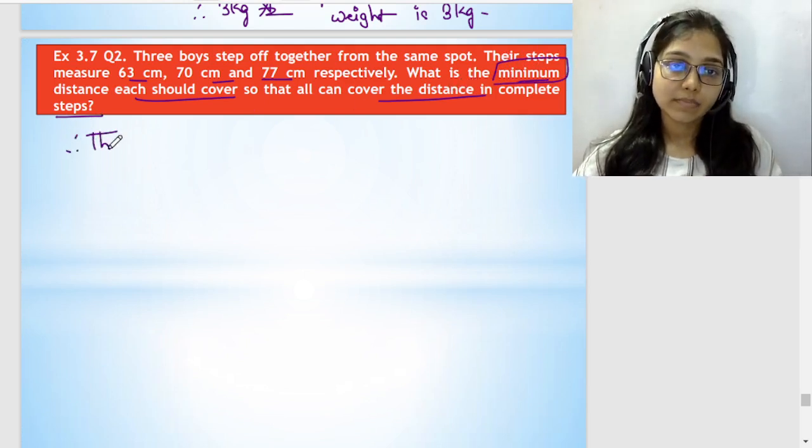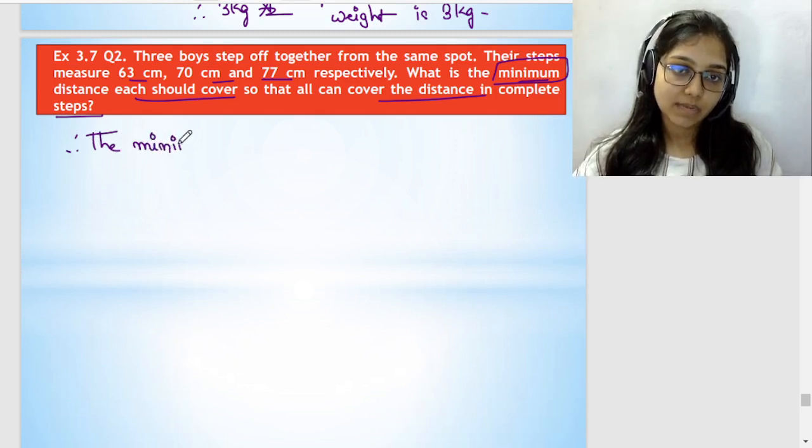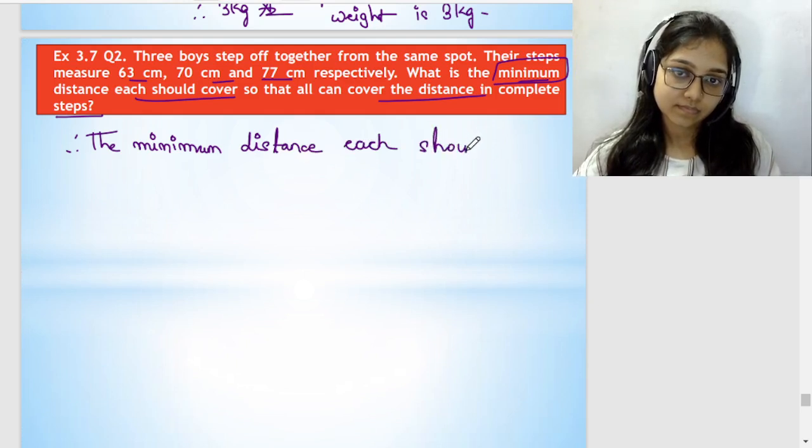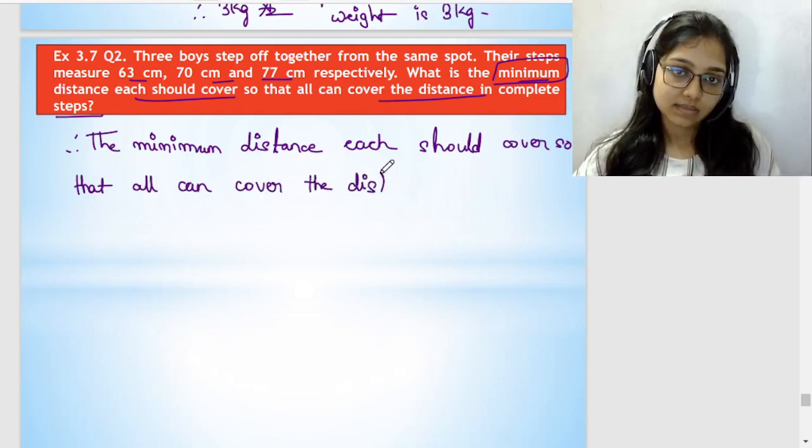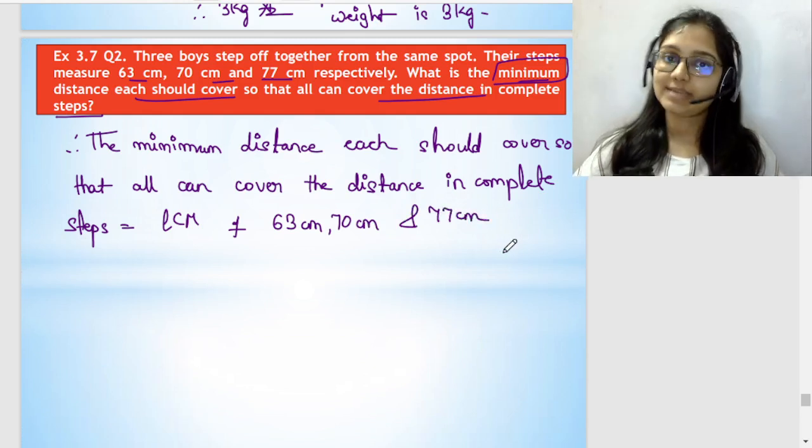So therefore, the minimum distance each should cover so that all can cover the distance in complete steps is equal to LCM of 63 cm, 70 cm and 77 cm, right?